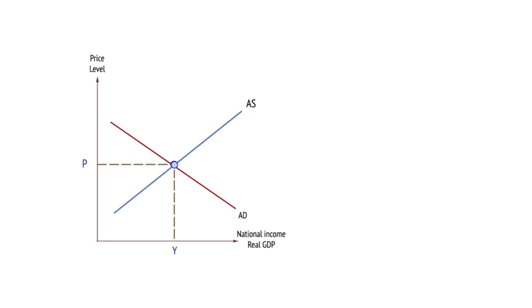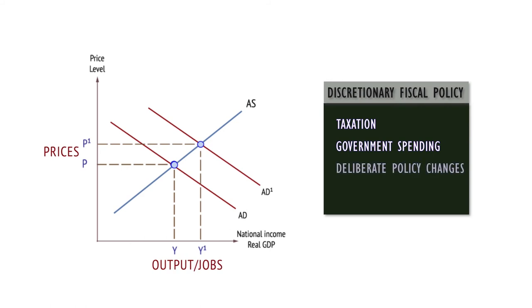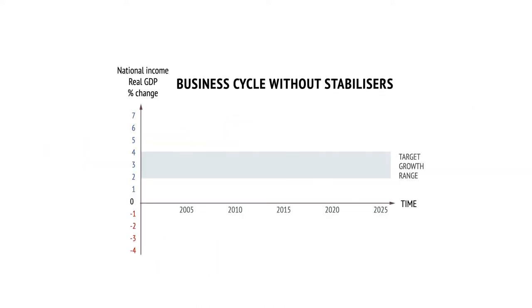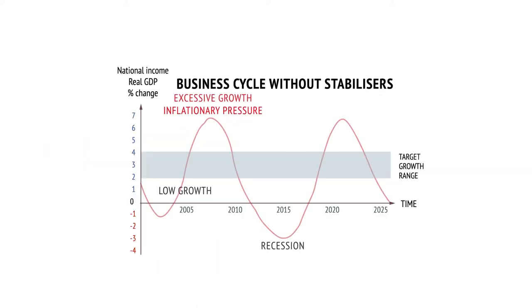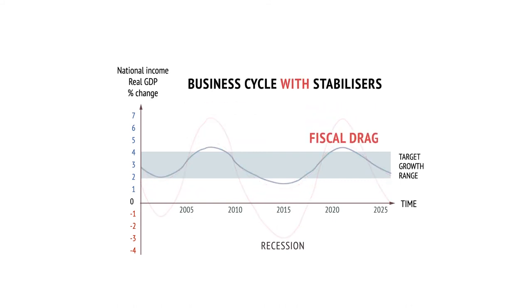Fiscal policy attempts to alter aggregate demand through changes in taxes, government spending, or borrowing. Discretionary fiscal policy means deliberate policy changes, usually in an annual budget, while automatic stabilizers use fiscal drag and fiscal boost to regulate the business cycle automatically. Fiscal drag means that progressive taxes and welfare benefits combine to slow an economy down if it is growing too quickly. Fiscal boost stimulates the economy automatically by using progressive taxes and benefits to pump money back into an economy when it is slowing down.